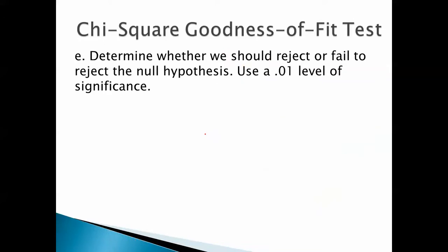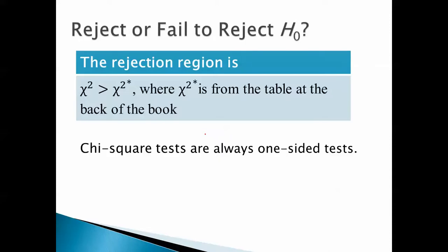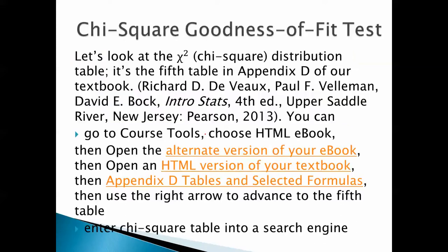Determine whether we should reject or fail to reject the null hypothesis. Use a 0.01 level of significance. The rejection region is chi-square is greater than chi-square star, where chi-square star is from the table at the back of the book. Chi-square tests are always one-sided tests.